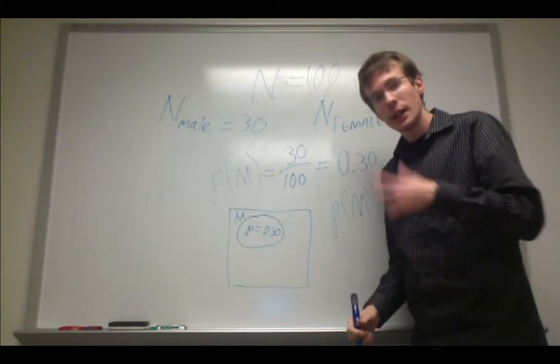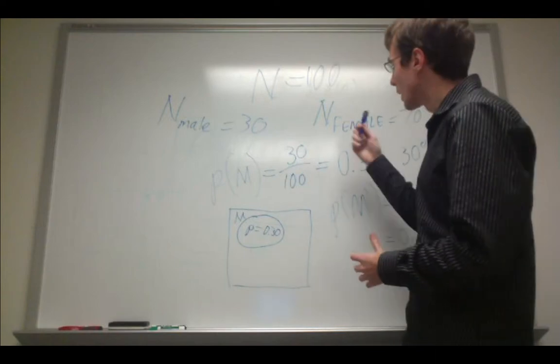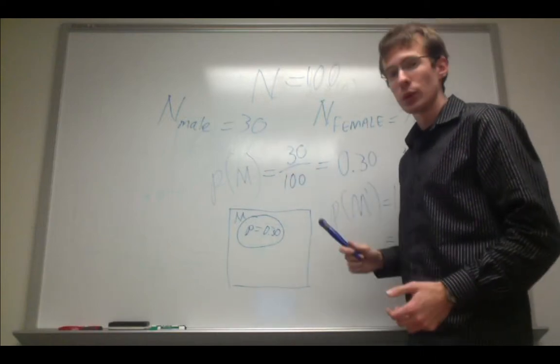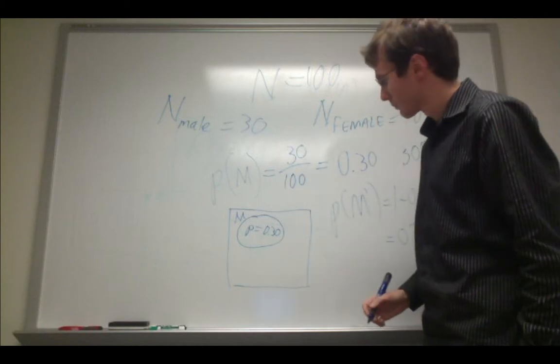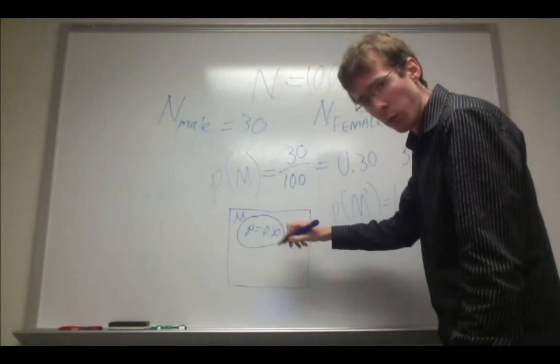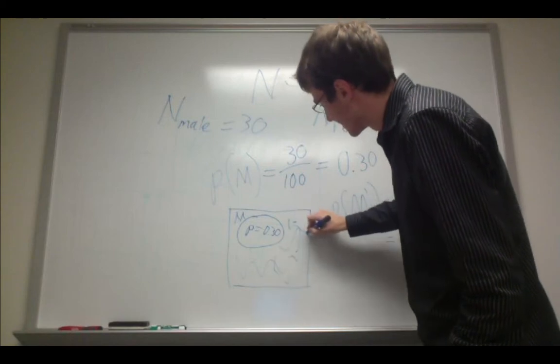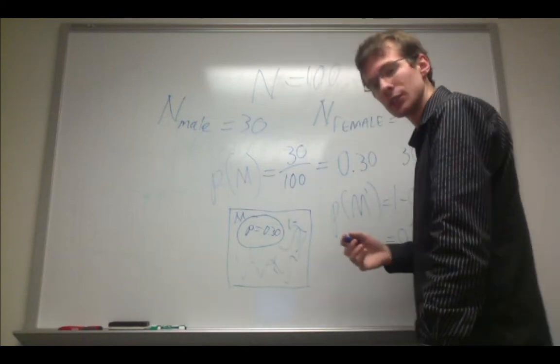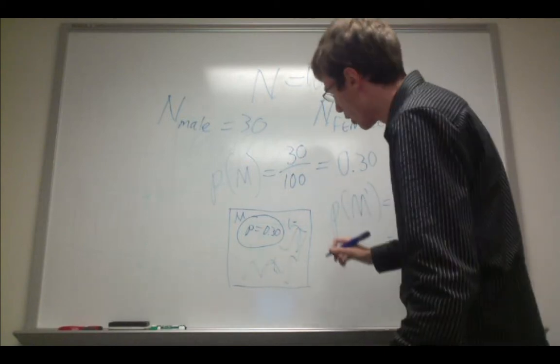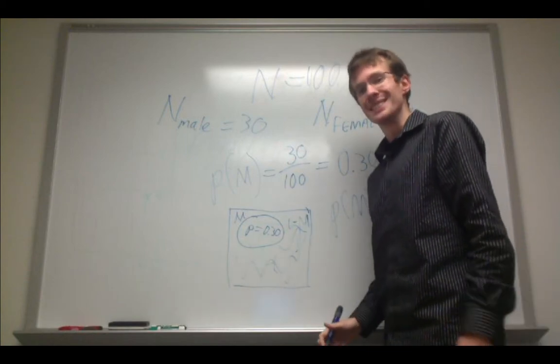Now, surprisingly, that's the same probability as drawing a female. And likewise, the complement of drawing a female at random would be 0.3. They're inversely related. So, this area in this little oval represents the probability of drawing a male. And everything else in this sample space, we can think of as either the probability of drawing a female, because that's the only other option, or M primed, which is 0.7.